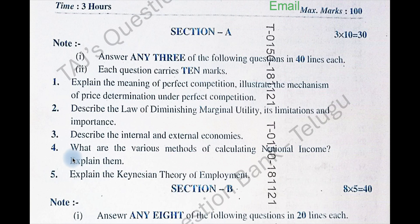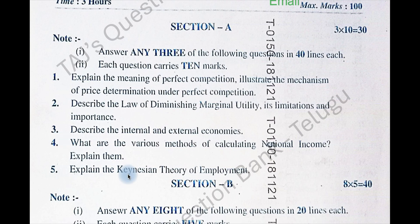Here you can see that the first question has repeated as question number four in your question paper. The second question in our video was: explain the meaning of perfect competition and illustrate the mechanism of price determination under perfect competition. This question has also repeated in your question paper.